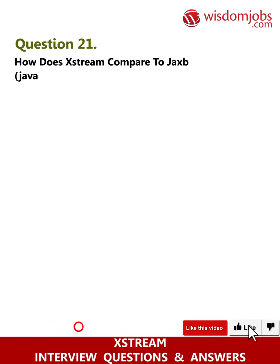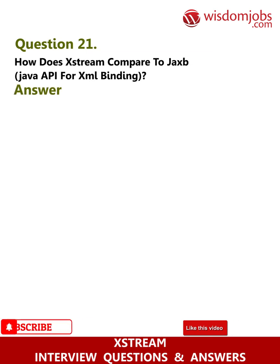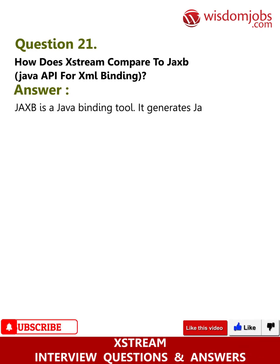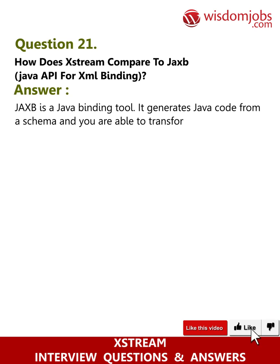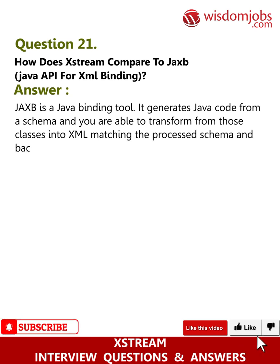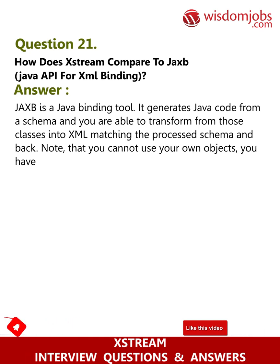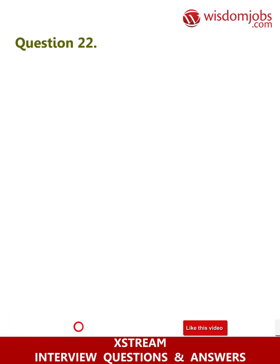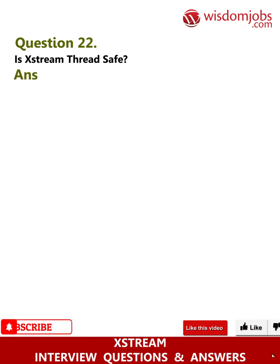Question 21: How does XStream compare to JAXB (Java API for XML Binding)? Answer: JAXB is a Java binding tool. It generates Java code from a schema, and you are able to transform from those classes into XML matching the processed schema and back. Note that you cannot use your own objects — you have to use what is generated.